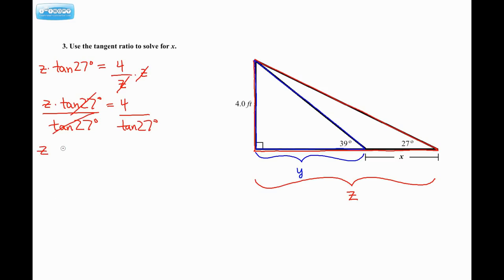So z is, and I'm just going to work this out on my calculator, 4 divided by tan 27 gives me approximately 7.8504. I'm going to keep a bunch of decimals for now, round a little bit more towards the end.